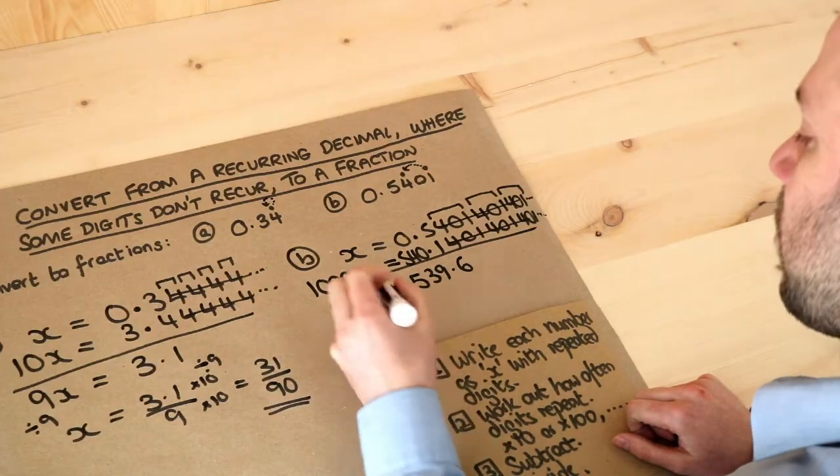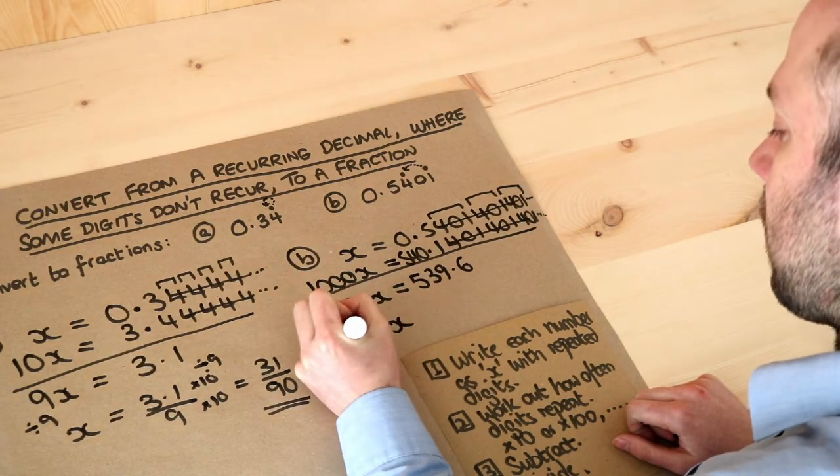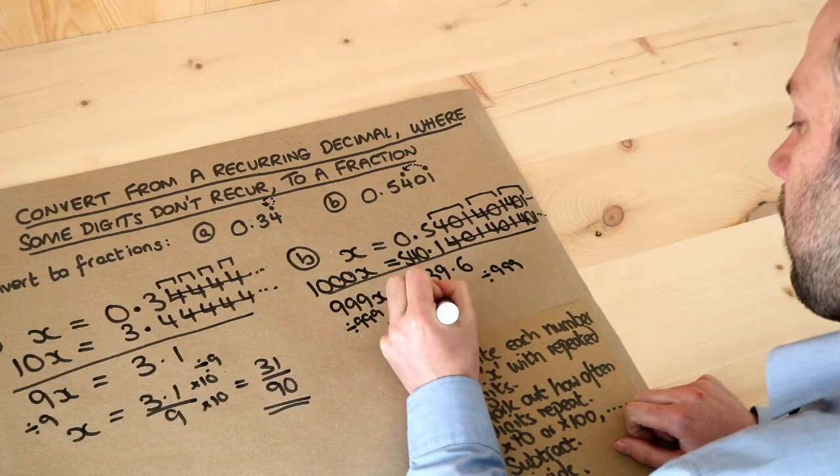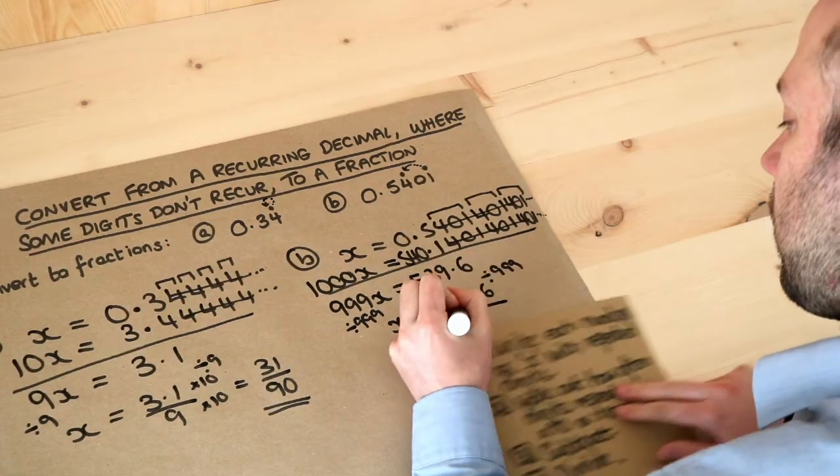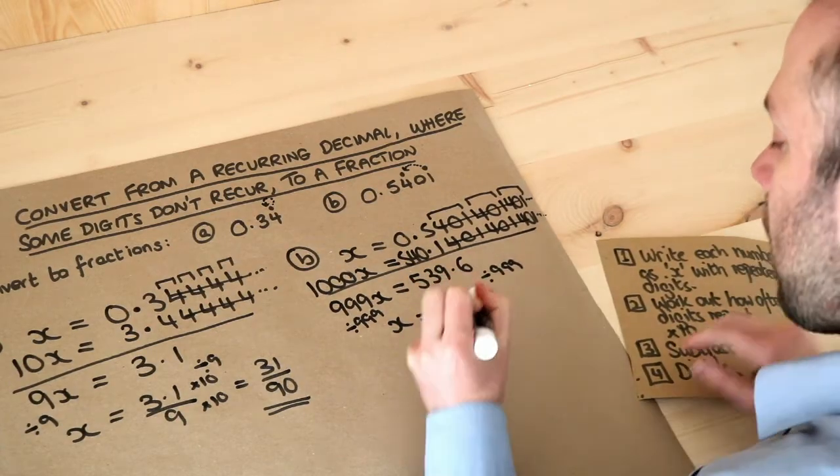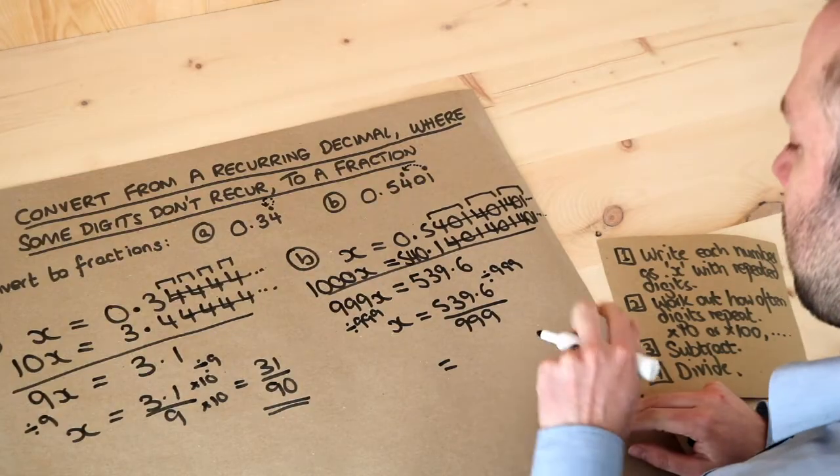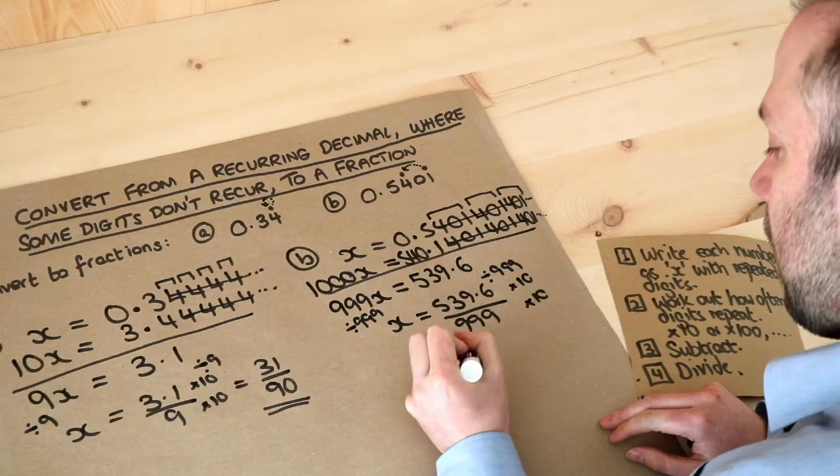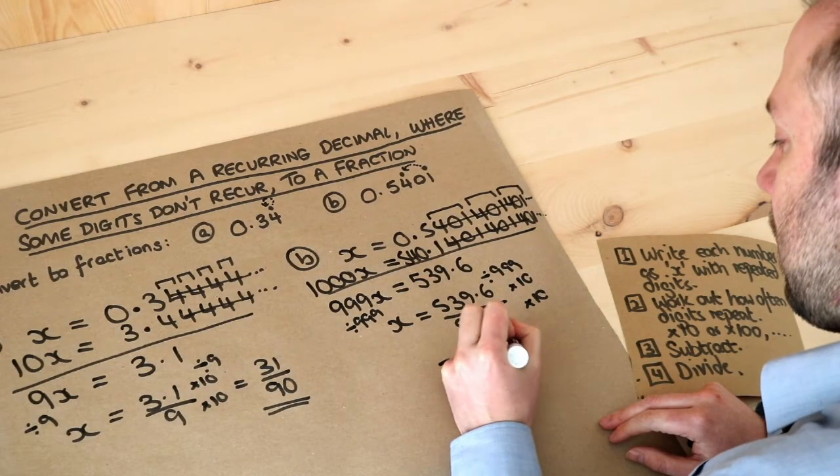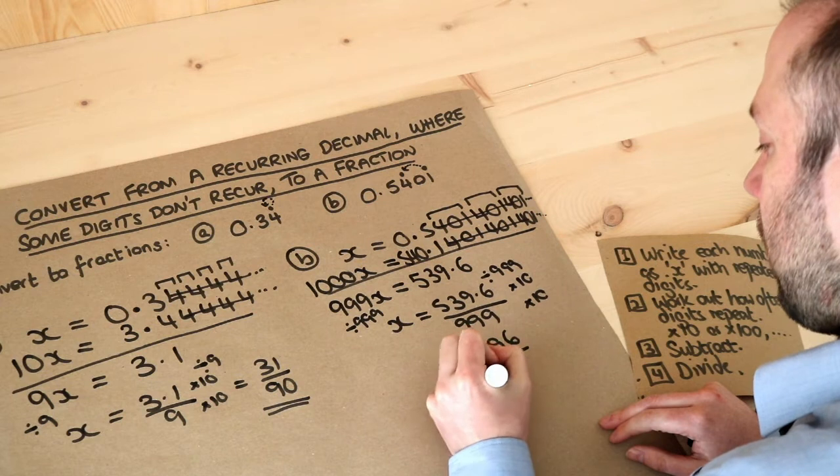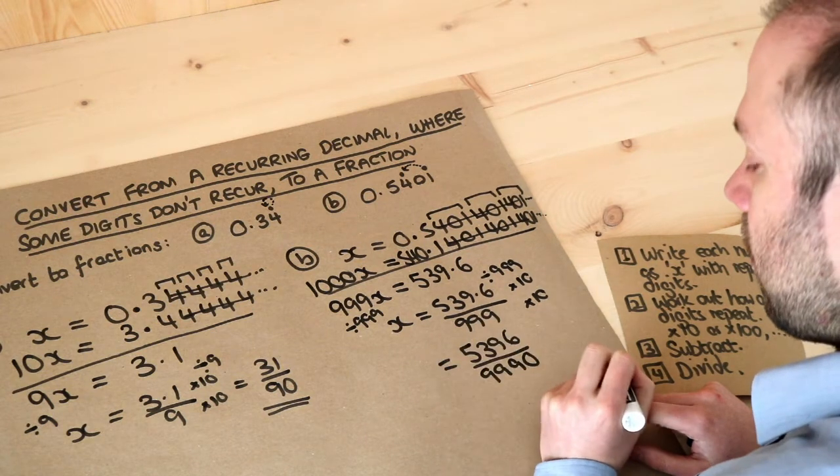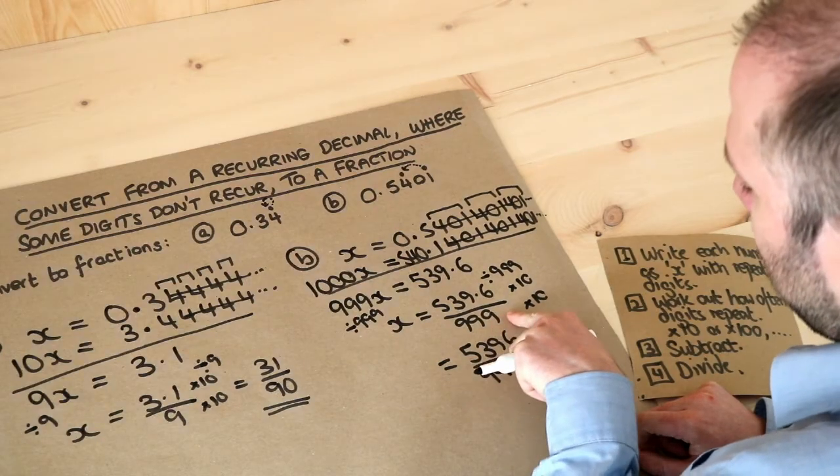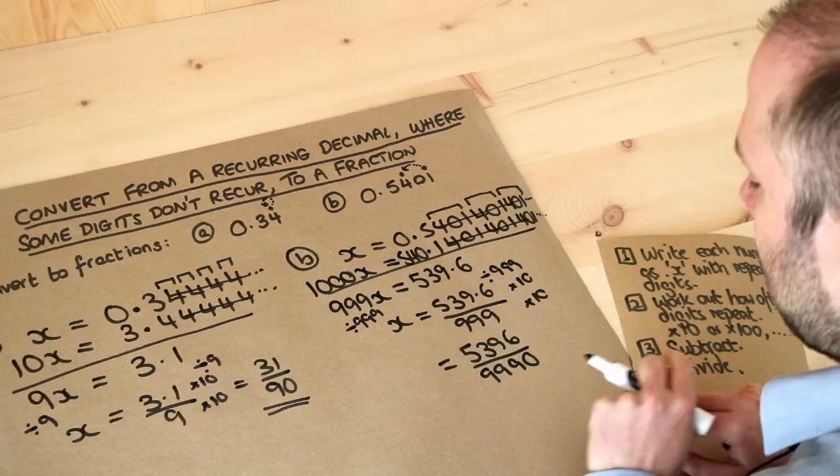And then finally we divide. So we've got 999.9x but we just want x. So we have to divide both sides of the equation by 999. So we get 539.6 over 999. And as before we don't like that decimal there, so we're going to multiply top and bottom of this fraction by 10. So that becomes 5396 over 9990. For some reason students often put 9999, I think just because they accidentally just repeat that digit rather than timesing by 10, we're just putting a 0 on the end.